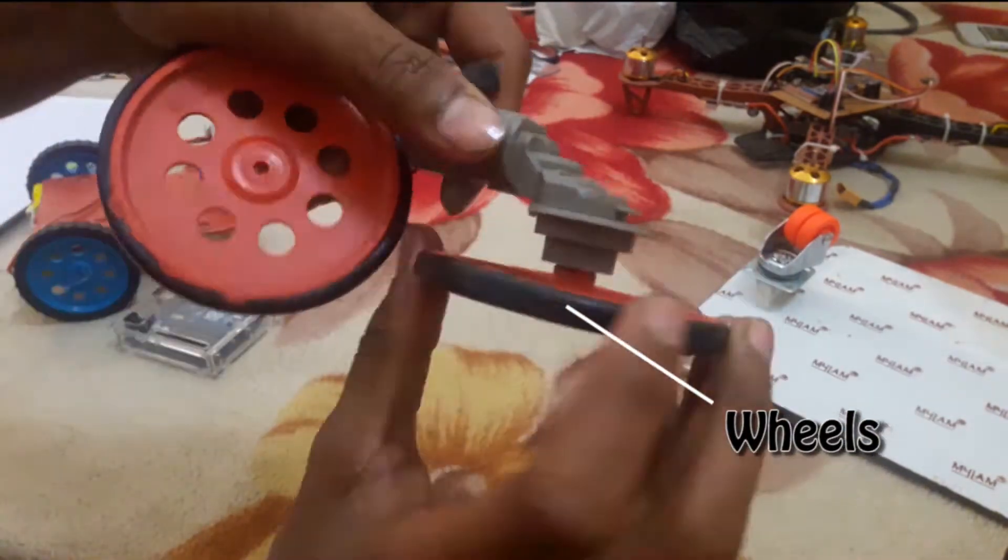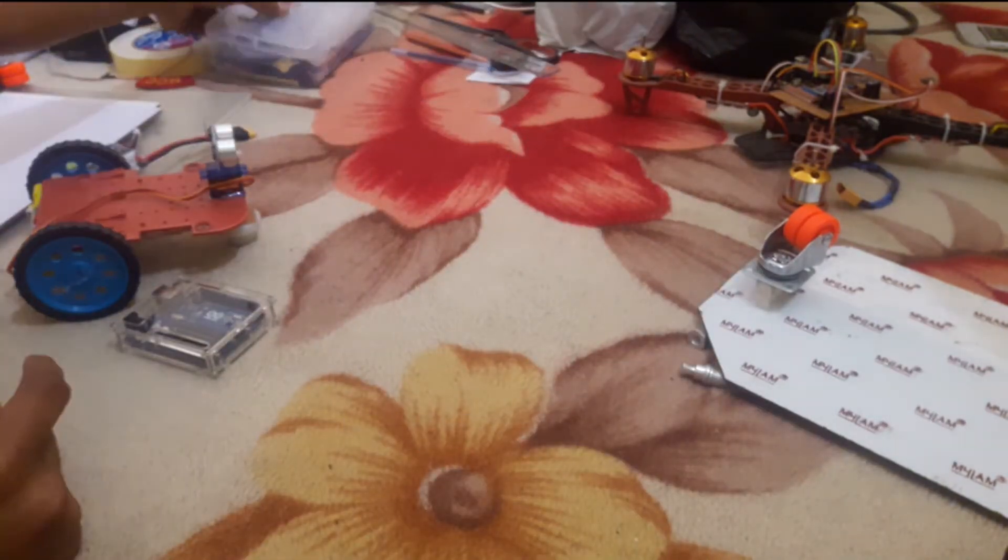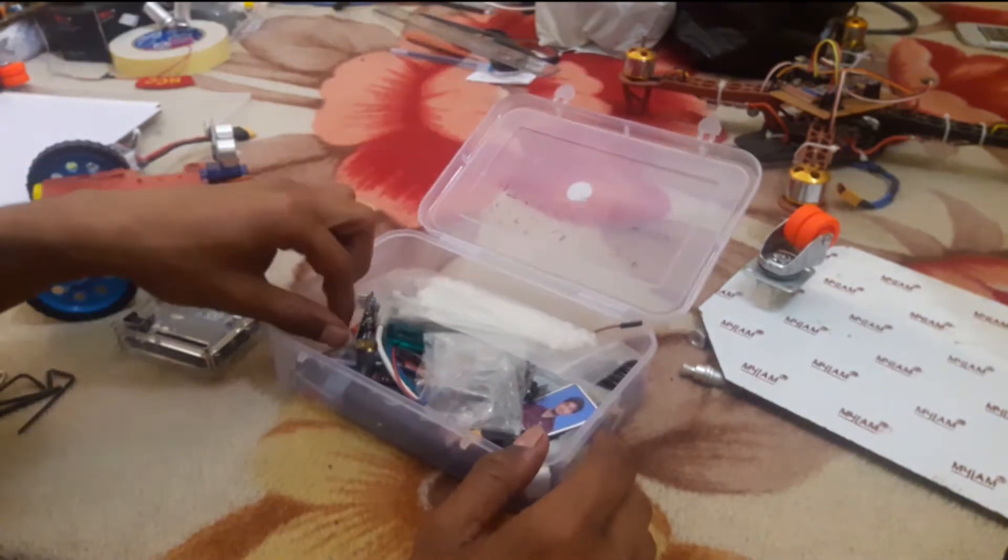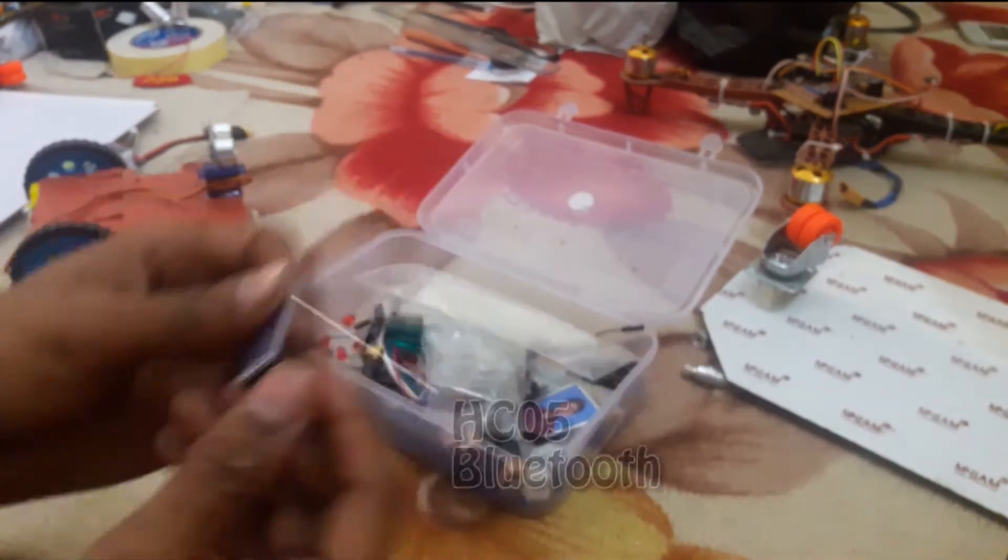Let's see some other wheels and motors with different RPMs and all. You can add a Bluetooth module to it for controlling it through your Android phone.